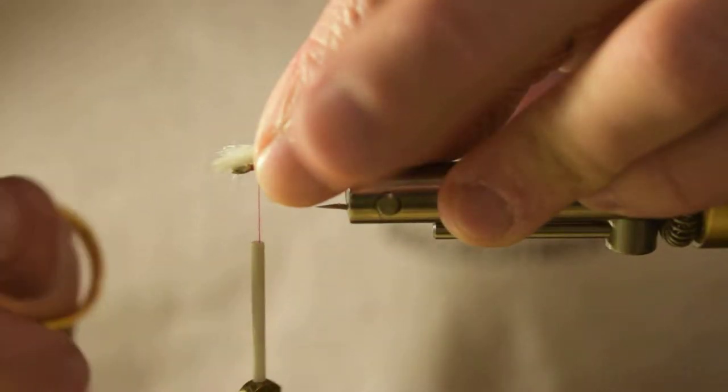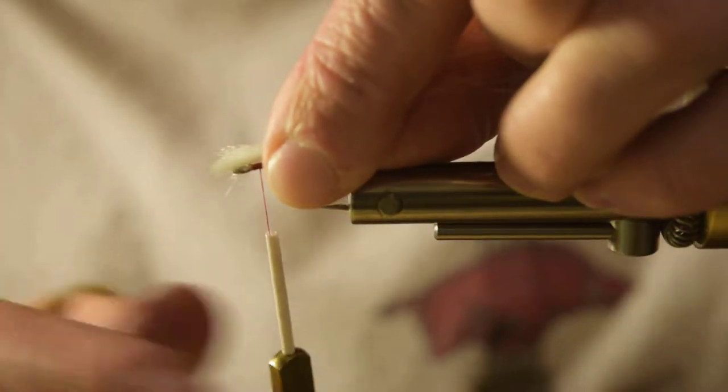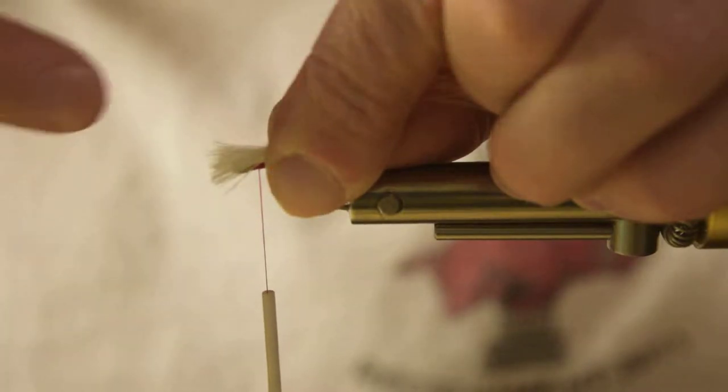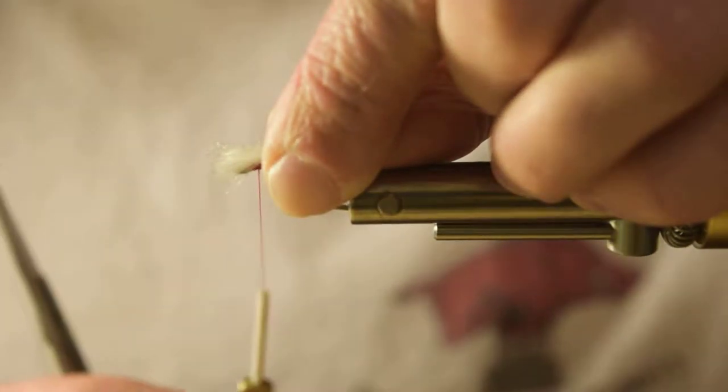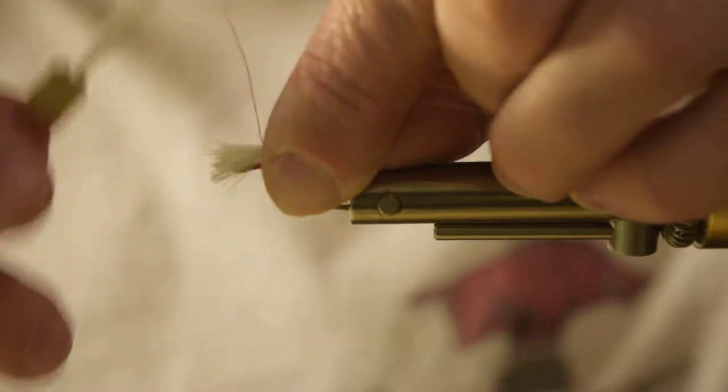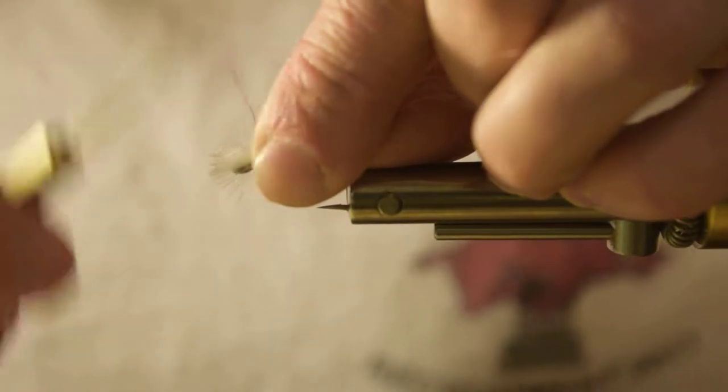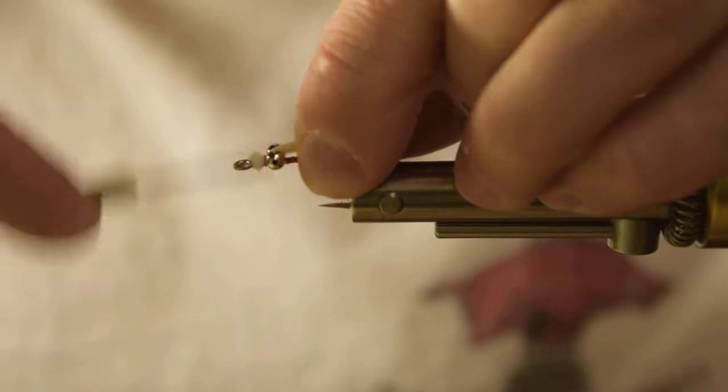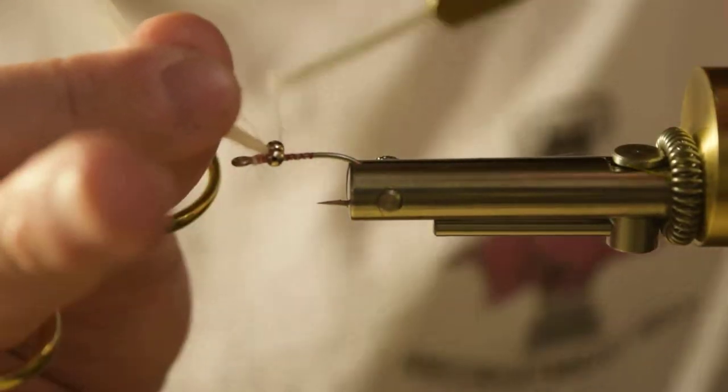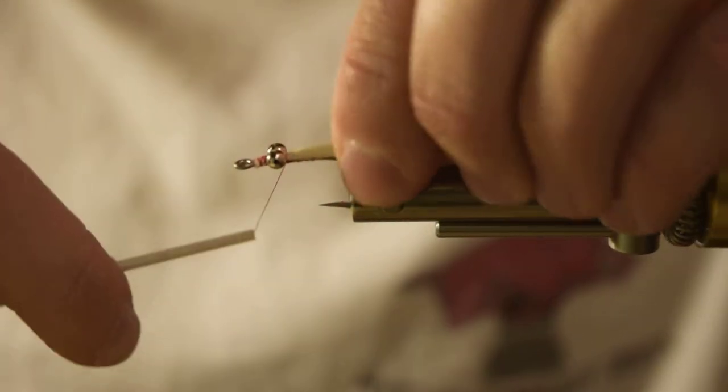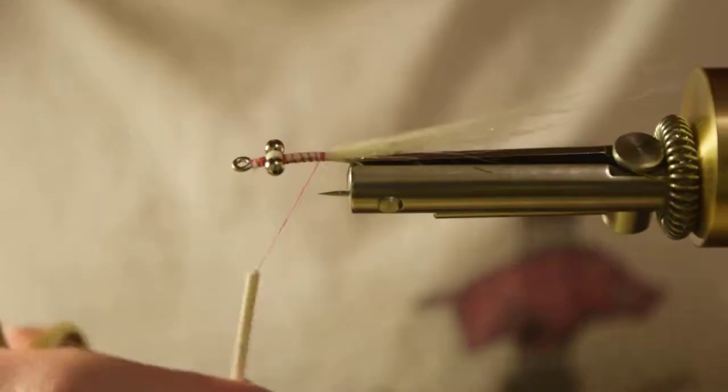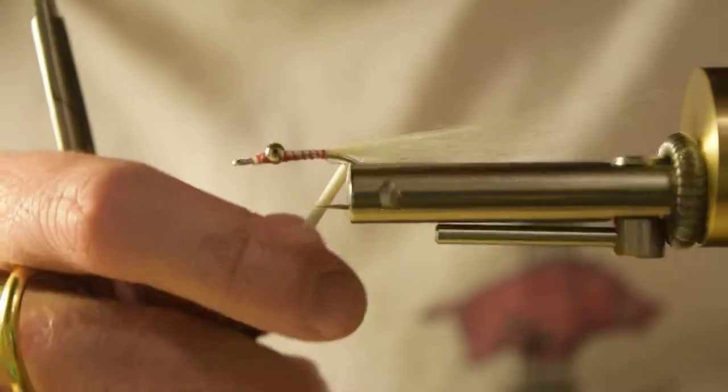I'm going to lay this craft fur over the eye of the hook. I'm going to make one loose wrap. You can spin your bobbin counterclockwise and that will cause your thread to jump back. So we make that loose wrap. I'm going to pull that craft fur until it's right behind the eye of the hook and tie it down with some nice tight wraps. I'm going to lift that craft fur up, jump behind the eyes. Now tie that craft fur down. I'm going to make some spiraling wraps to the back of the hook. And now I'm just going to cover all that craft fur up.